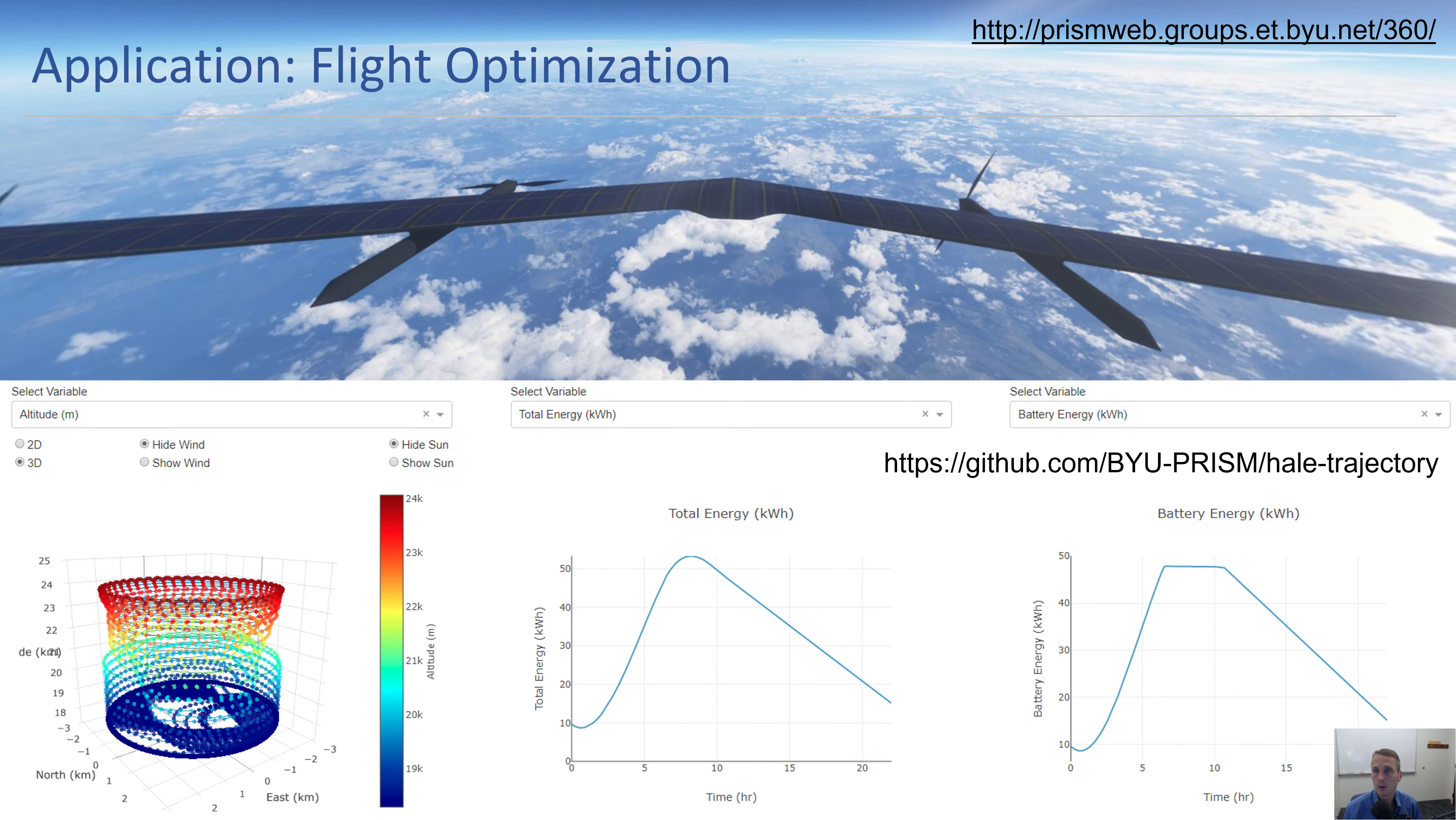Just to highlight some of the other applications that can be completed with some of these open source tools, this is a flight optimization problem. We collaborated with Facebook on some of these high altitude long endurance aircraft, flying wings that would fly at 60,000 feet, harvest solar energy during the day. The challenge was being able to fly at 42 degrees latitude north during winter solstice.